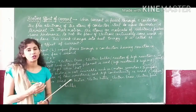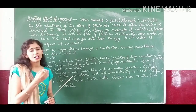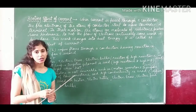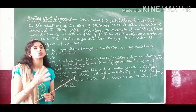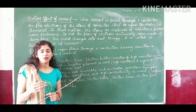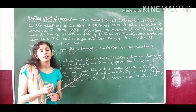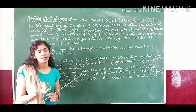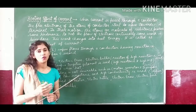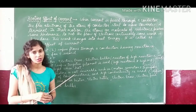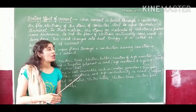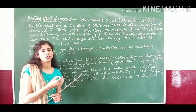You have to understand from the phrase 'heating effect of current'. Suppose we pass electric current in any appliance, then it starts to heat up. For example, suppose an electric press — whenever you pass electric current inside it, it starts to heat up and we use this heat energy. Similarly, whenever electric current is passed through the electric heater, it starts to heat up and we use that heat energy.